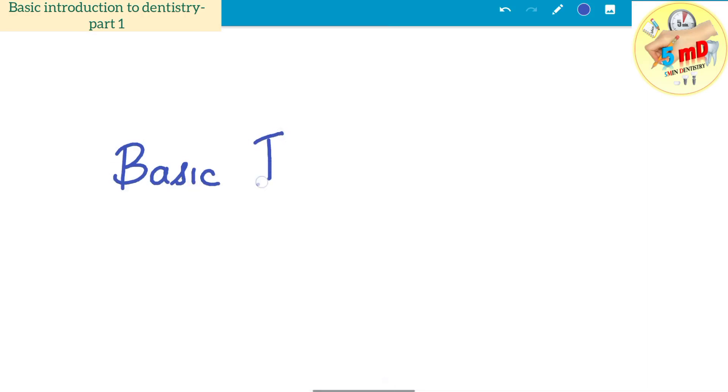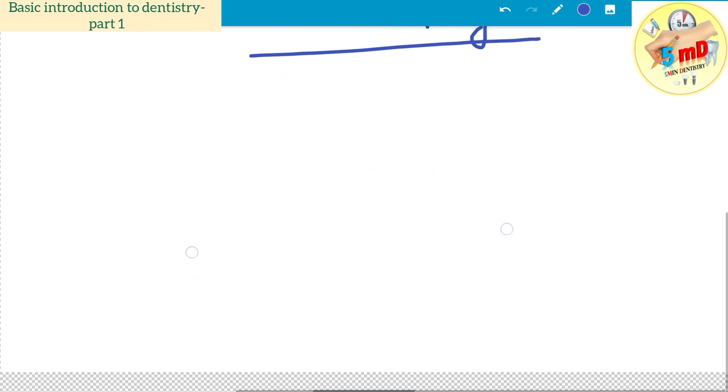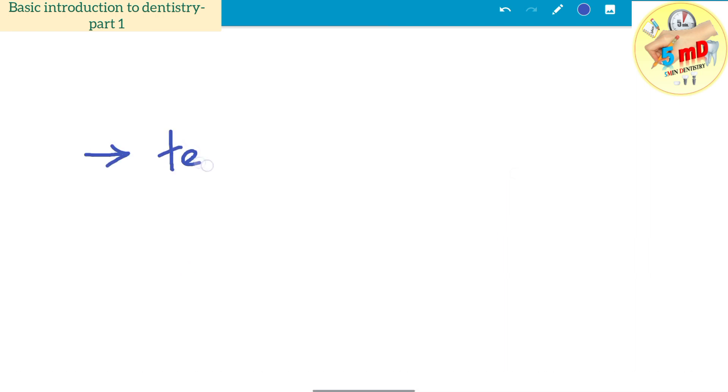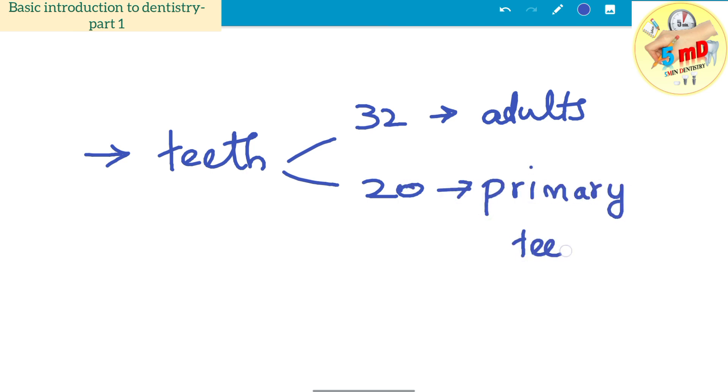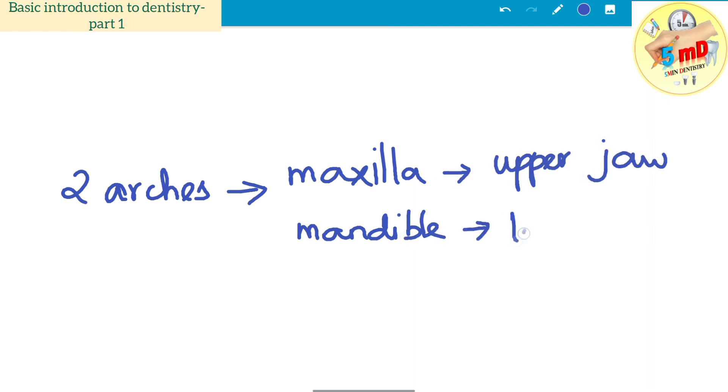For those planning to enter dentistry or who have just entered this field, this video will give you a basic introduction to dentistry. In human dentition, there are 32 teeth in adults and 20 in kids—primary teeth commonly called milk teeth. These 32 teeth are arranged with 16 in the upper arch and 16 in the lower arch. The upper jaw is known as the maxilla and the lower jaw as the mandible.